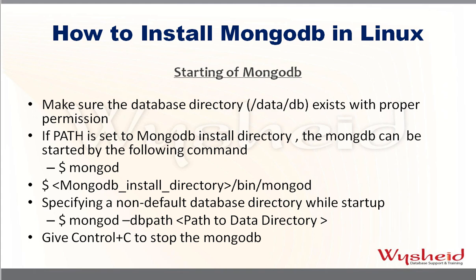Once MongoDB is installed, we need to start it. MongoDB is started by running the mongod command (M-O-N-G-O-D). If you have set the PATH variable as explained, you can start MongoDB from anywhere at the command prompt. Otherwise, you must navigate to the MongoDB home directory, then into the bin directory, and run the mongod command — for example: /mongodb/bin/mongod.